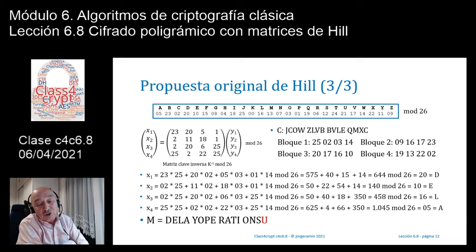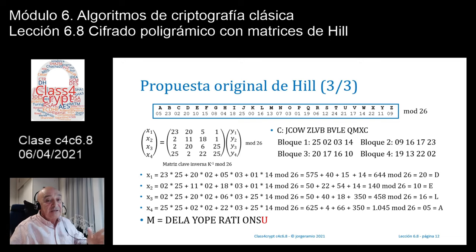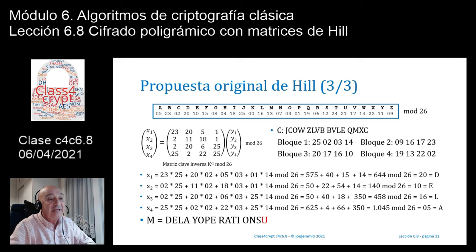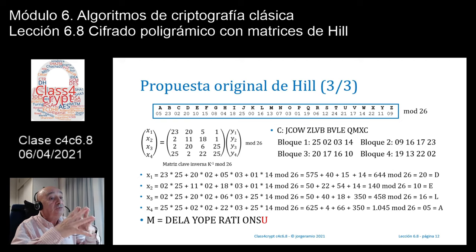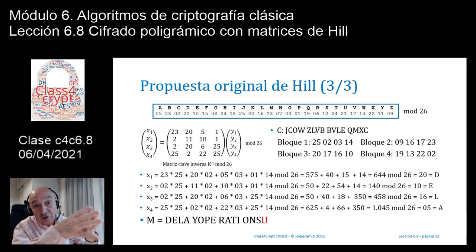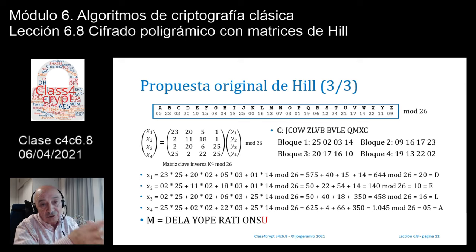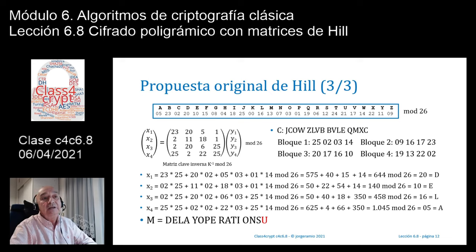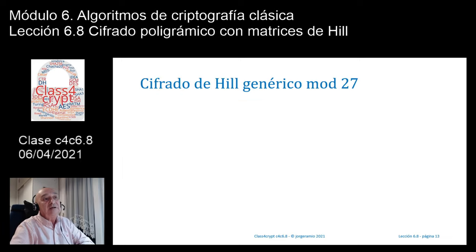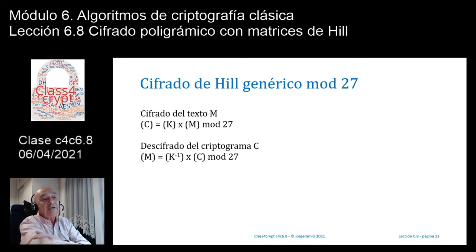Lo importante es que las dos matrices propuestas — la directa para cifrar y la inversa para descifrar — son matrices inversas entre sí, con lo cual su multiplicación dentro del módulo 26 da la matriz de identidad, con diagonal de unos y lo demás ceros. Ahora haremos un cifrado genérico en módulo 27, tomando la codificación estándar donde A=0, B=1, C=2, ..., Z=26.